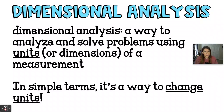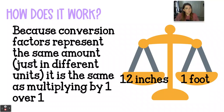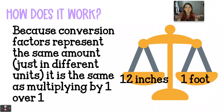Dimensional analysis is a process or a way to analyze and solve problems. What we're going to do is use the units of a measurement in order to help us solve that problem. Really what that means is that we're just converting units from one unit to another, typically by multiplying by conversion factors. If you do something to one side of an equation, you have to do the exact same thing to the other side, and that's kind of what's happening here — we are doing the same thing to both sides because our two quantities are equal to each other.